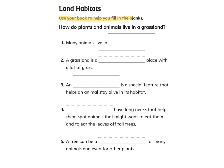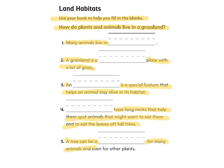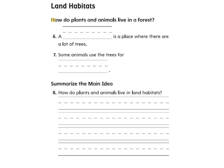For land habitats, use your book to help fill in the blanks. How do plants and animals live in grasslands? Many animals live in blank. A grassland is a something place with a lot of grass. Something is a special feature that helps an animal stay alive in its habitat. Something have long necks that help them spot animals that might eat them and to eat leaves off tall trees. A tree can be a something for many animals and even for other plants. A something is a place where there are a lot of trees. Summarize the main idea: how do plants and animals live in land habitats?